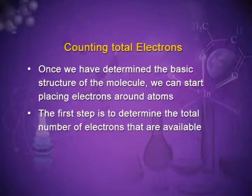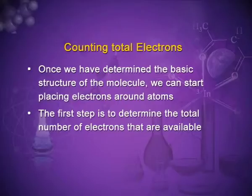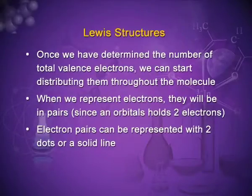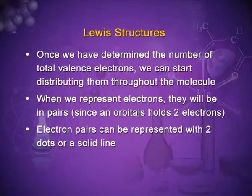Let me revise by counting the total electrons. Once we have determined the basic structure of the molecule, we can start placing electrons around atoms. The first step is to determine the total number of electrons available. We use the group number of the element to indicate the number of valence electrons it contributes to the molecule — for example, oxygen in group 6A contributes six electrons. Once the total valence electrons are determined, we distribute them throughout the molecule. Electron pairs can be represented with two dots or a solid line.